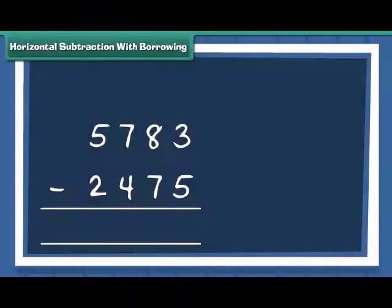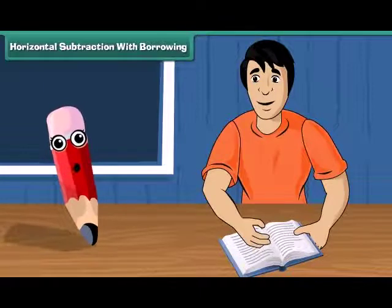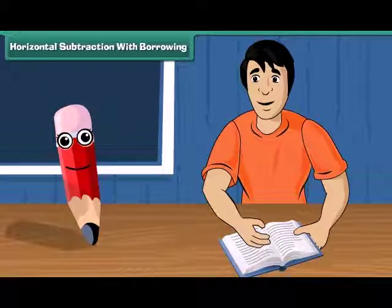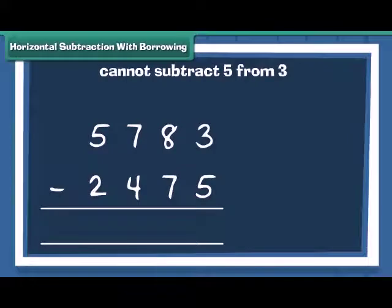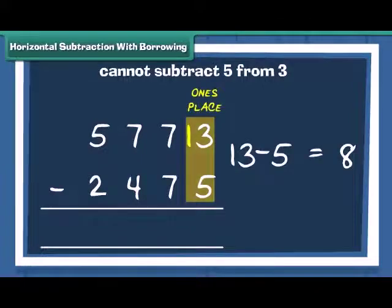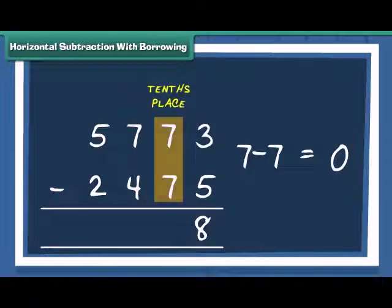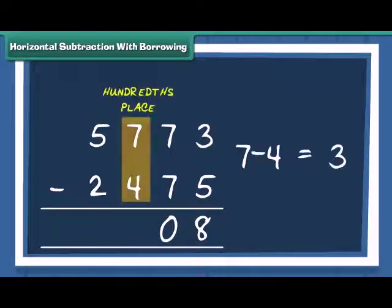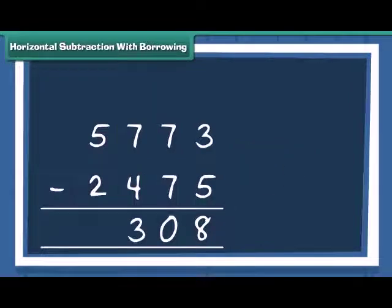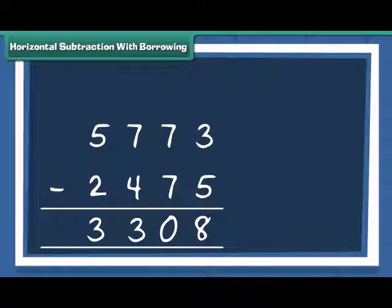Mac, how will we solve this question? It's simple. We start subtraction of numbers at 1's place. Note that you cannot subtract 5 from 3. So, you will borrow 10 from 8 to make 13, and 13 minus 5 is equal to 8. Subtract the 10's to get 0. At 100's place, 7 minus 4 is 3. Finally, subtract the 1000's to get 3. Was it not easy?